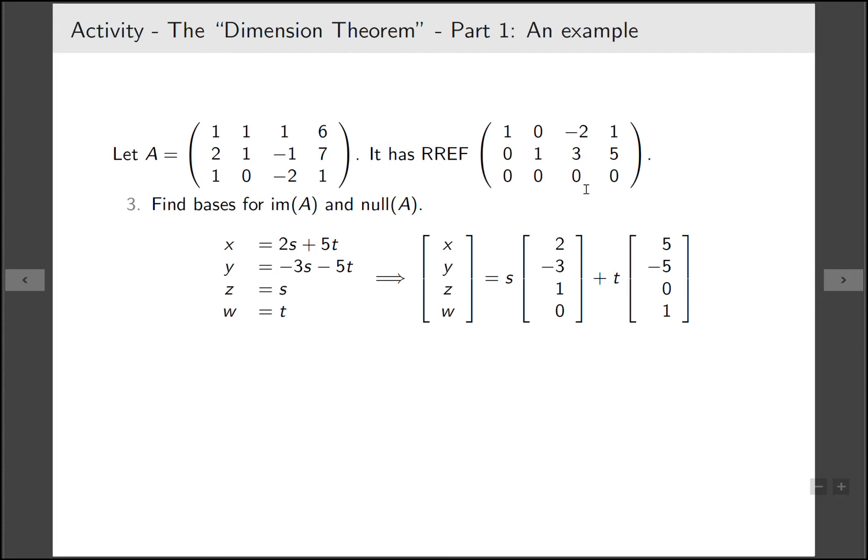Here we have z being a parameter and here we have w being a parameter, and then for the columns with leading ones we can write them in terms of the other two. So if we express this in column form we'll get the solutions like this and then here are our two basic solutions. If you collect the two basic solutions together you'll get the basis of the null space.